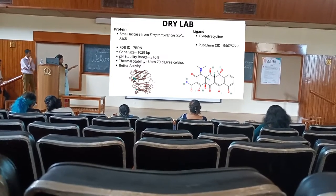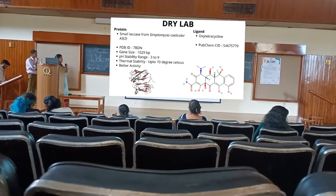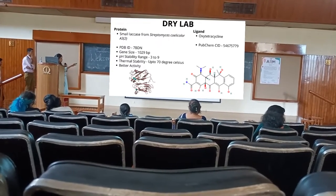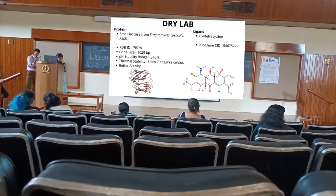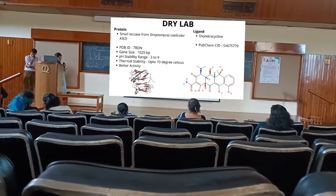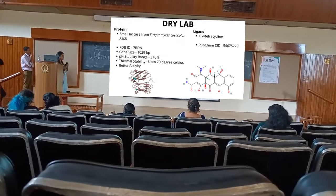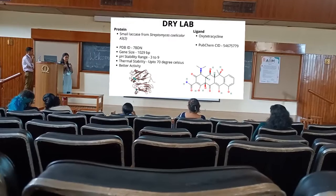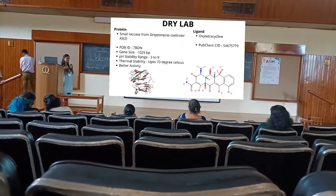Small laccase has a higher pH range of 3 to 9 and more stability — it is stable up to higher temperatures of about 70–80 degrees Celsius. Apart from that, it also has better activity and specificity compared to regular laccase. The main structural difference is that laccase has three domains while small laccase has two domains.